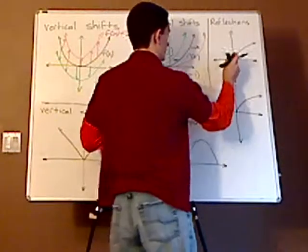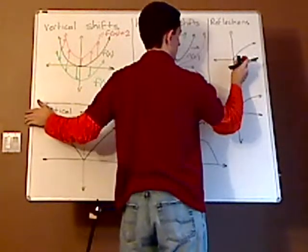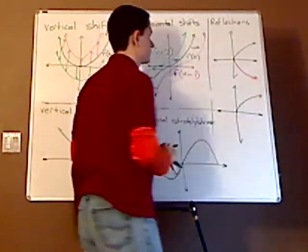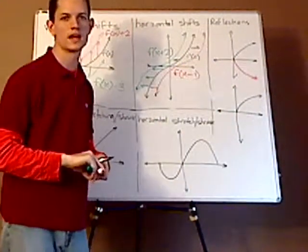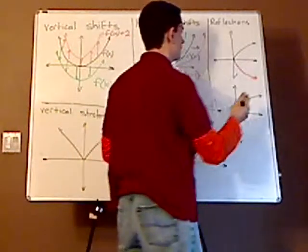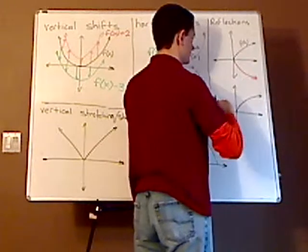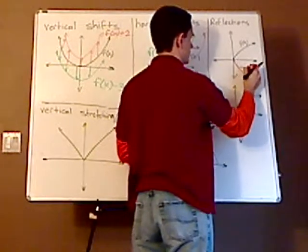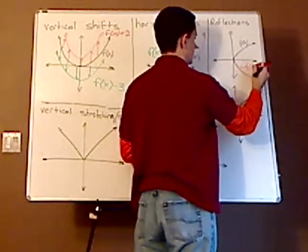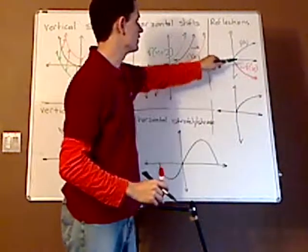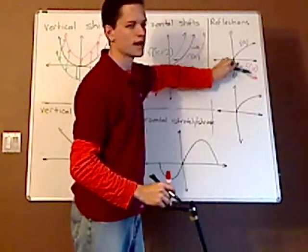Let's say that this is reflecting like that, reflecting about the y-axis, sorry, the x-axis. If this is f of x, then this is negative f of x. So this is when it reflects off the x-axis.